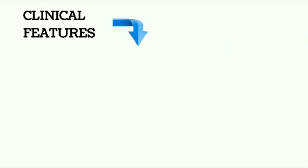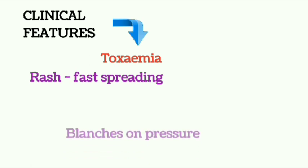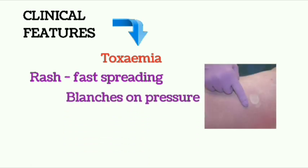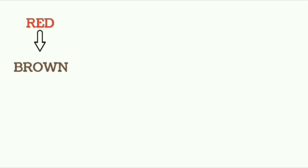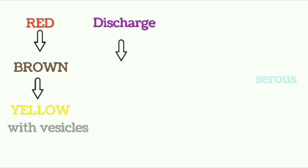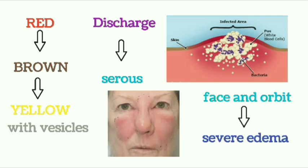Clinical Features: Toxemia is always the most important feature in erysipelas. The rash is fast spreading and blanches on pressure. The rash is always raised and present with a sharp margin. In the early stage there will be redness, which then becomes brown, and in the later stage it becomes yellow with vesicles and serous discharge. In the face and orbit, it will produce severe edema.